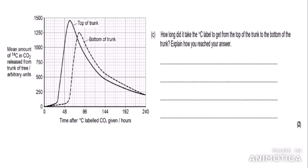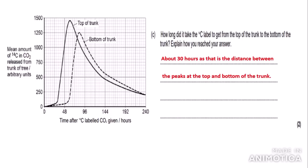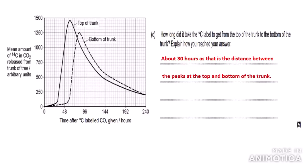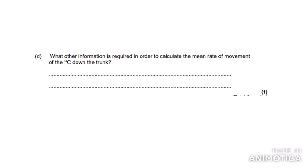Next part: How long did it take the 14C label to get from the top of the trunk to the bottom? You need to look at the distance between the peaks on the graph, as the peaks indicate when the 14C first reached each point. The distance between the peaks is approximately 30 hours. The mark scheme accepts about 30 hours, because the graph is somewhat subjective, so being a little off is acceptable.